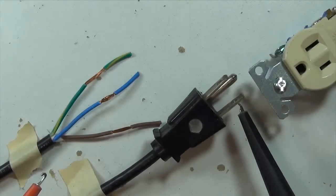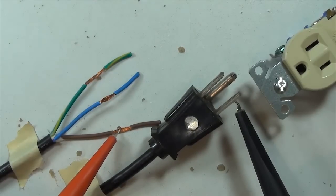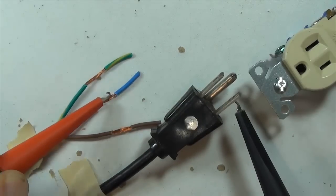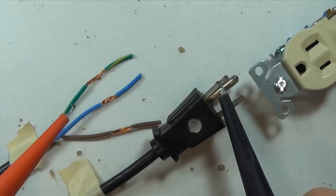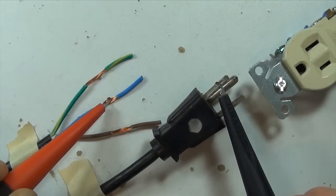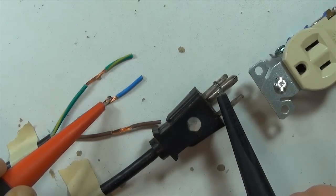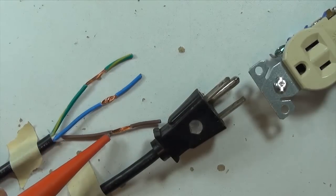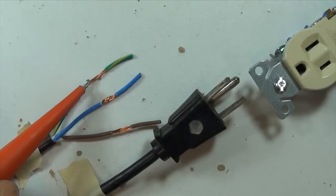This is my hot terminal, and it looks like the brown is my voltage carrier or hot wire. This is the neutral, and blue is going to be the neutral wire. So we've got brown is hot, blue is neutral, green is earth ground.